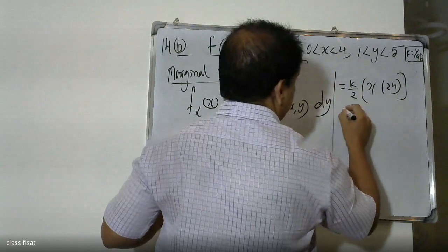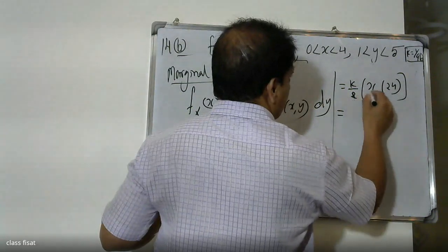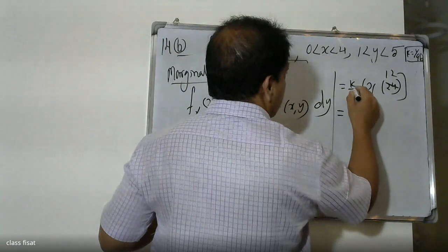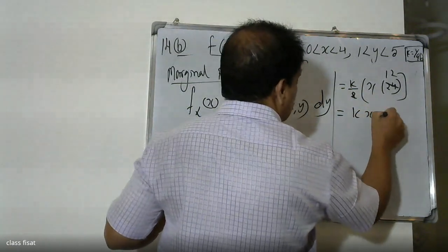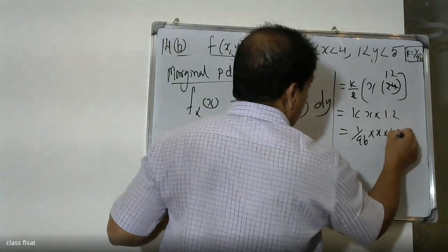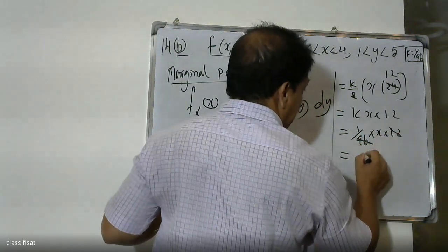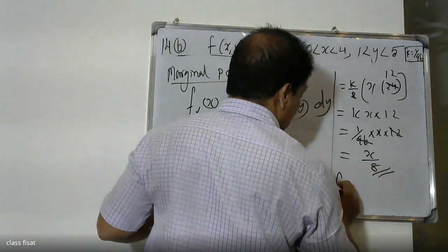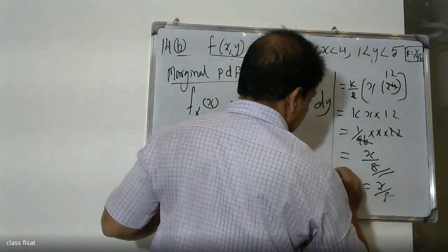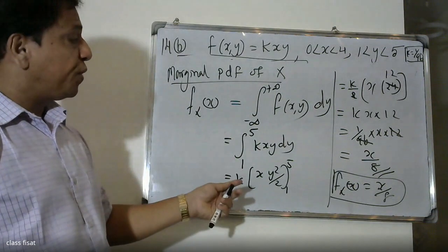Evaluating the marginal PDF of X, we get fx(x) = x/8, for 0 < x < 4. The marginal PDF of X is therefore x/8.